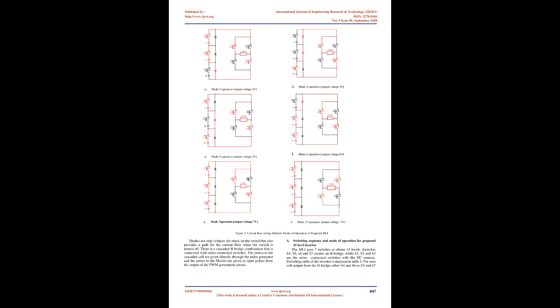Cascaded H-bridge MLIs can be either symmetrical or asymmetrical type. In symmetrical cascaded H-bridge, all the voltage sources used are of the same magnitude, while in asymmetrical the voltage sources have unequal magnitudes. The advantage of asymmetrical is that a higher number of levels can be obtained with a reduced number of voltage sources. Few researchers have proposed solar-based MLI in different literatures.